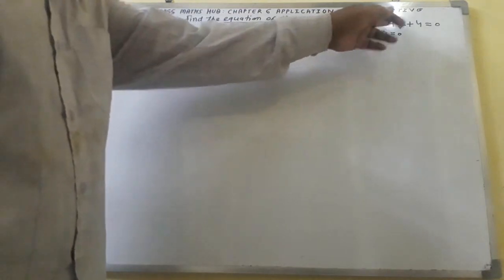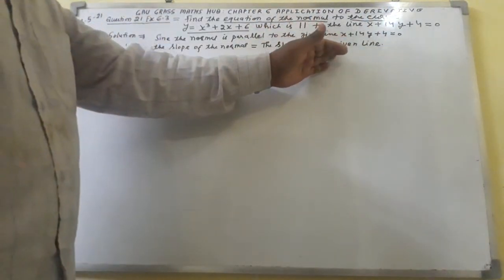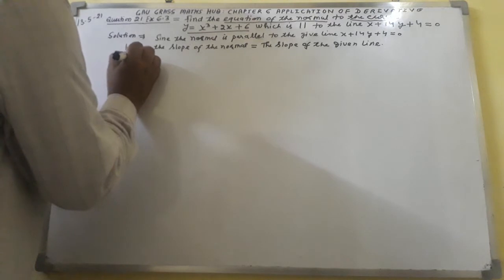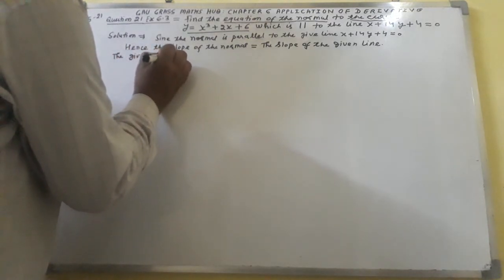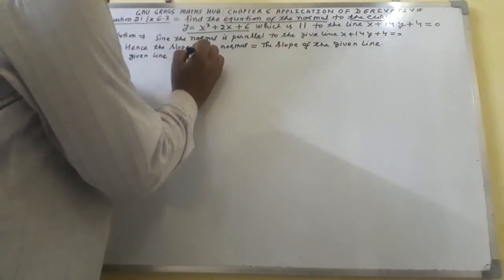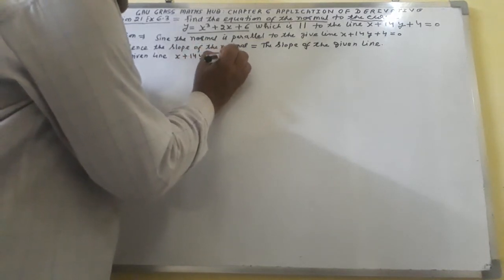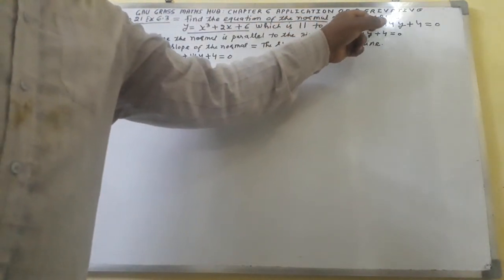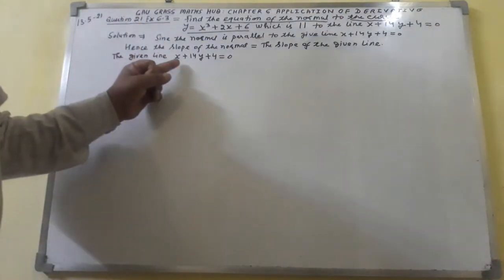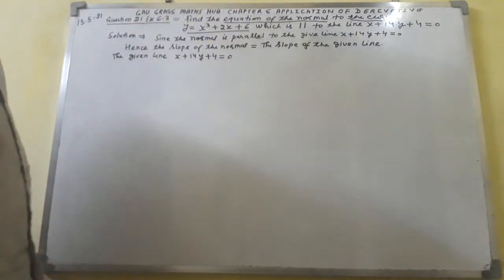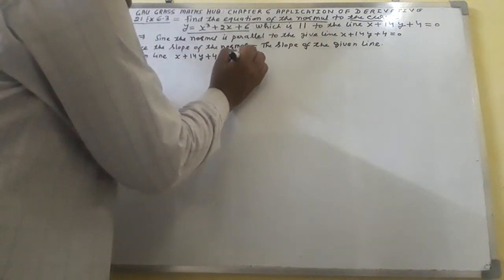The given line is there, so we shall find out the slope of the given line. Given line: x plus 14y plus 4 equals 0. Here we shall find out the slope of the given line.